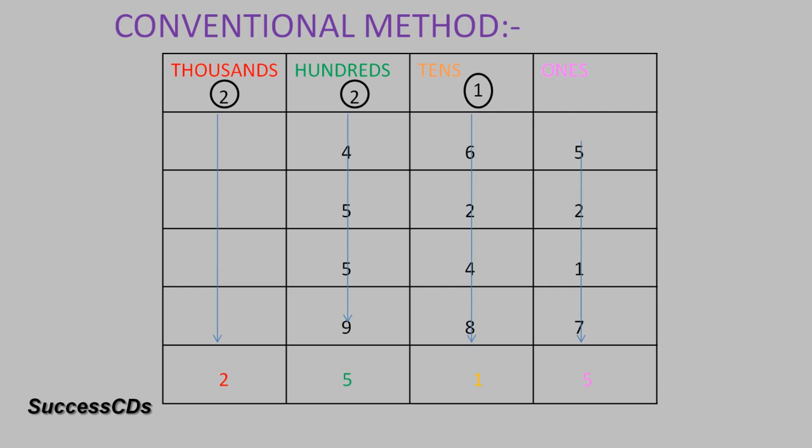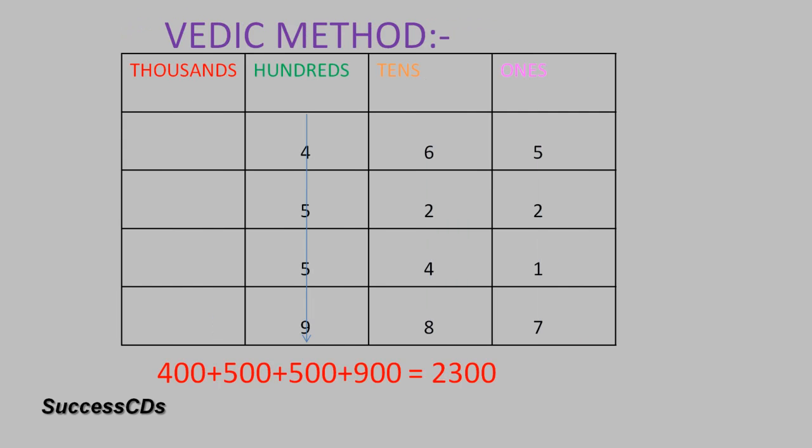You cannot do this calculation of the conventional method in your mind — you have to put pen to paper. But as per the Vedic method, you can do a major part of the calculation in your mind. In the Vedic method, you start from the hundreds place and add up the hundreds digits with their place value.